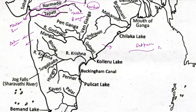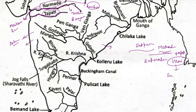The Tapi flows between the Satpura hills to the north and Satmala hills to the south, with Mahadev hills in the region. Surat city is situated on the Tapi river and is an important textile centre — this is where ancient textile production started. There is also a paper and newsprint factory situated on this river.